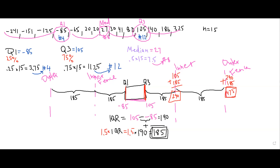Starting on the left side at Q1 = negative 85, I subtract 285, moving in the other direction, giving minus 370 for the inner left fence. Subtracting 285 again gives the outer left fence at minus 655. This follows the procedure of using 1.5 times the interquartile range — the number 285 — repeatedly.